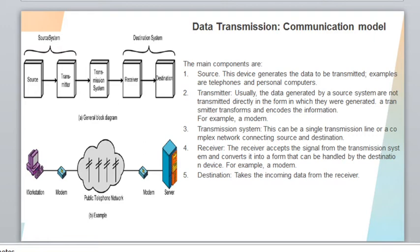In normal cases the receiver performs a demodulation operation — just the opposite of the transmitter. The receiver receives the signal from the transmission media and converts those signals into a form which can be handled by the destination device. The last component is the destination, which takes the incoming data from the receiver.